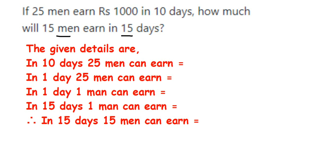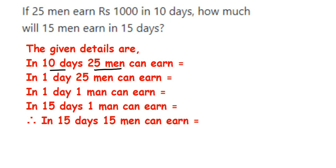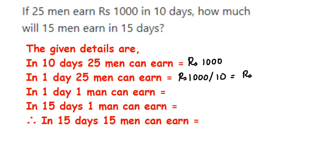We know that 1000 rupees is earned over 10 days. So we're going to find out for one day how much 25 people are earning. In 10 days, 25 men earn 1000 rupees. So for one day, we divide 1000 by 10 because they are working 10 days, which equals 100. So 25 men together are earning 100 rupees per day.